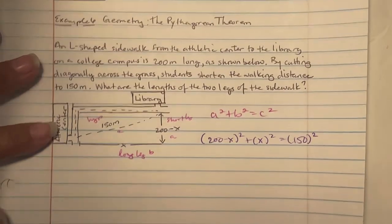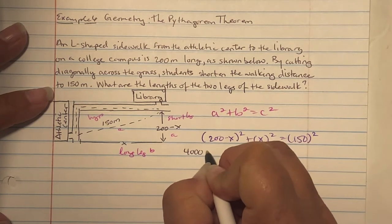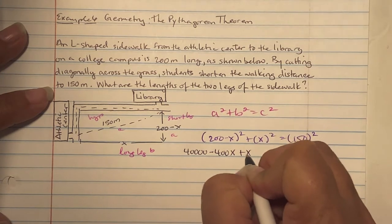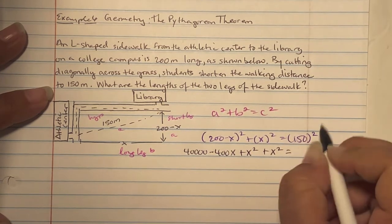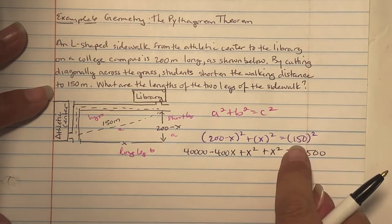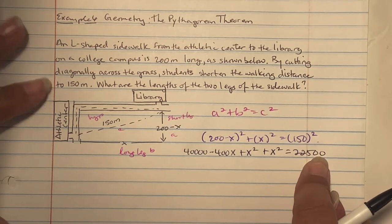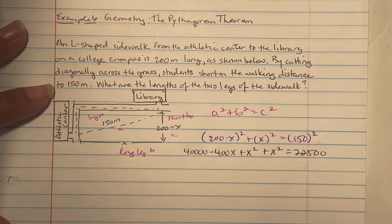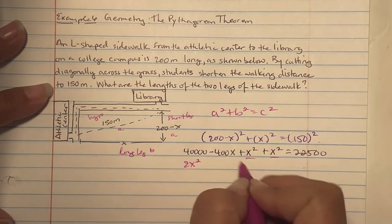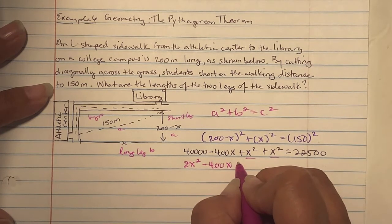We're going to write 200 minus X squared plus X squared equals 150 squared. This is going to use the expansion rule. It becomes 40,000 minus 400X plus X squared plus another X squared equals 22,500. We want everything to go to one side.